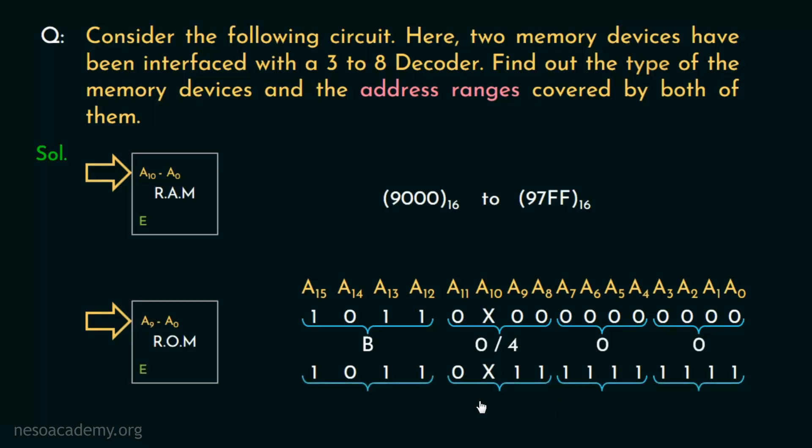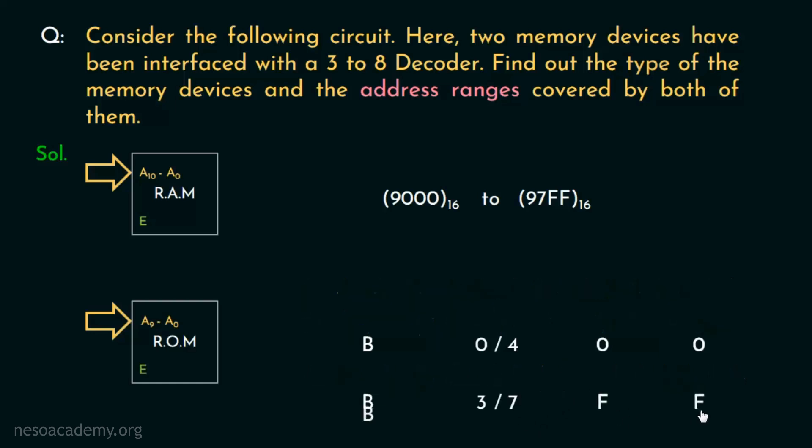Now similarly for the last address, this group again will give us B. Now if we place 0 in place of A10, we end up having 3. Because 0011 is actually 3. And if we place 1, 0111 will give us the value 7. And we already know this, all ones is F. So the address ranges covered by the ROM is either B000 to B3FF or B400 to B7FF.